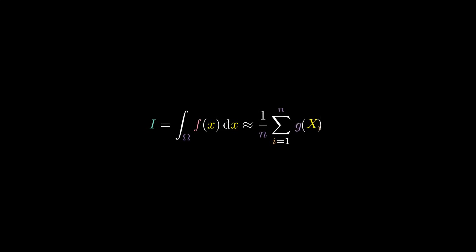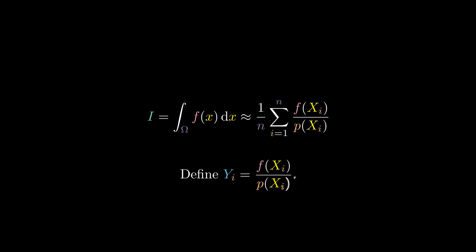Now recall our integral estimator. We can define random variables, y sub i, as the i-th term in the sum. We can see that our estimator is the sample mean of these random variables. Since the y sub i are independent and identically distributed, and their expected value is equal to the desired integral, we just need their variance, and thus their standard deviation to be finite to use the central limit theorem.